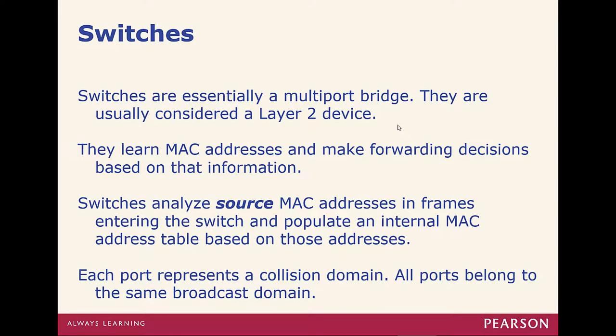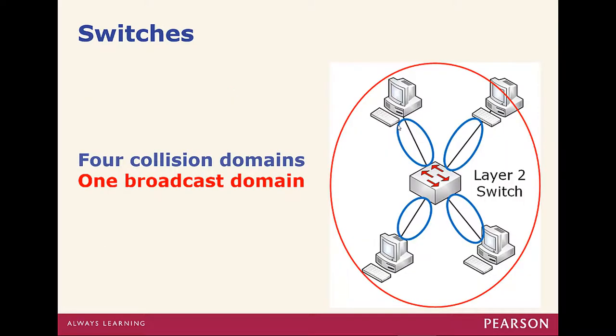Switches operate at layer 2 and they are a multiport bridge. They learn MAC addresses and make forwarding decisions based off of the MAC address. They analyze source MAC addresses in frames entering a switch on a particular port to build a MAC address table. Each port represents a collision domain, meaning two devices communicating at the same time will not interfere with one another on a switch. Still layer 2, so one broadcast domain, but each port is a collision domain.